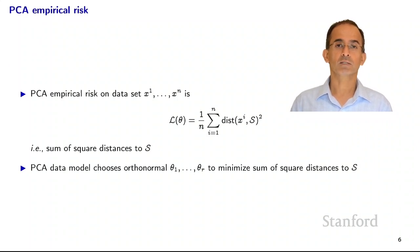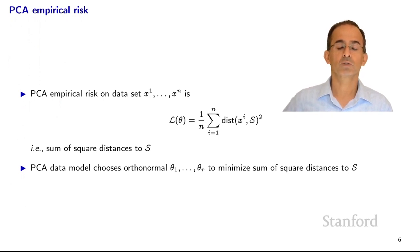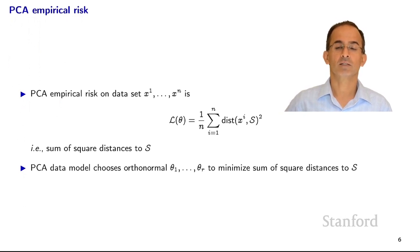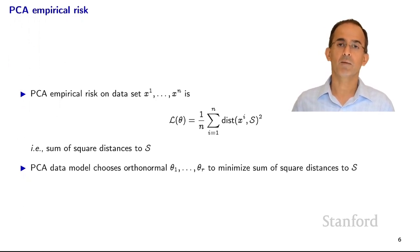The empirical risk is the average of the loss function over the data set: (1/n) times the sum over i from 1 to n of the distance from x_i to S squared. The PCA data model says we should choose orthonormal Theta 1 through Theta r to minimize this empirical risk. We get a bunch of data, pick the Theta that minimizes the empirical risk, and then use that model, for example, to do imputation.